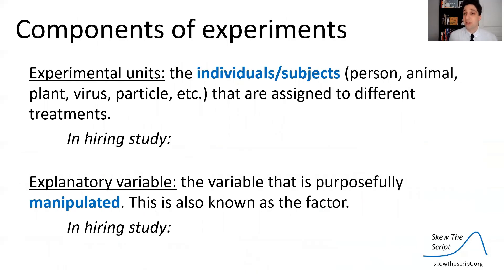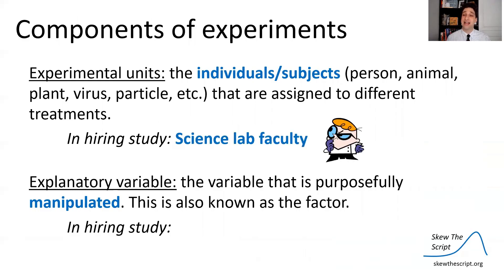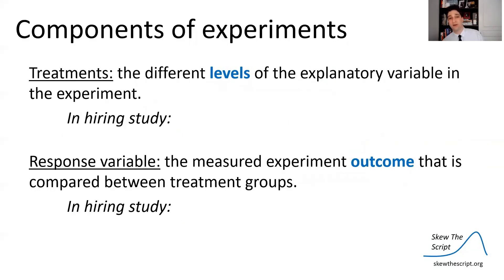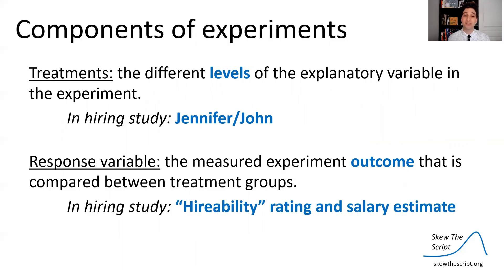At the end, they took ratings from each faculty member and compared salary estimates and hireability scores across the Jennifer and John groups. The experimental units are the lab science faculty who received either treatment. The explanatory variable — also called a factor — is the applicant's name, Jennifer or John. The treatments are the different levels of that explanatory variable. The response variables are the hireability rating and the salary estimate from these faculty.